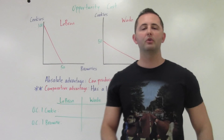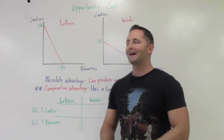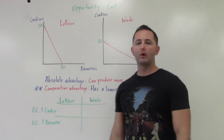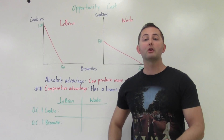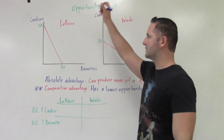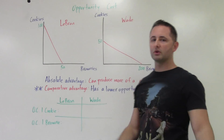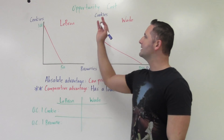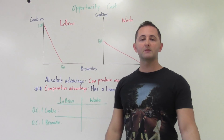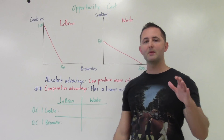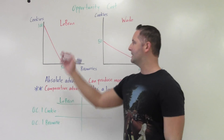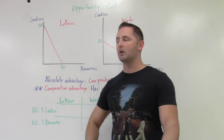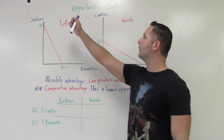We're going to talk about opportunity cost today. We have two PPCs, one for a different economy. I'm going to give you a micro example — this could be for two different countries, like the US and Mexico. It doesn't matter whether it's a micro or macro example. We have two products being made, assuming there's only two things people can do: bake cookies or bake brownies. And we're assuming there's only two people.